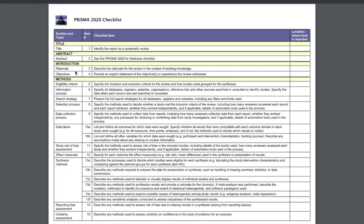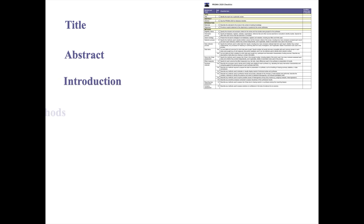The main PRISMA 2020 checklist consists of 27 items, with each item falling under the six sections of title, abstract, introduction, results, discussion, and other information.